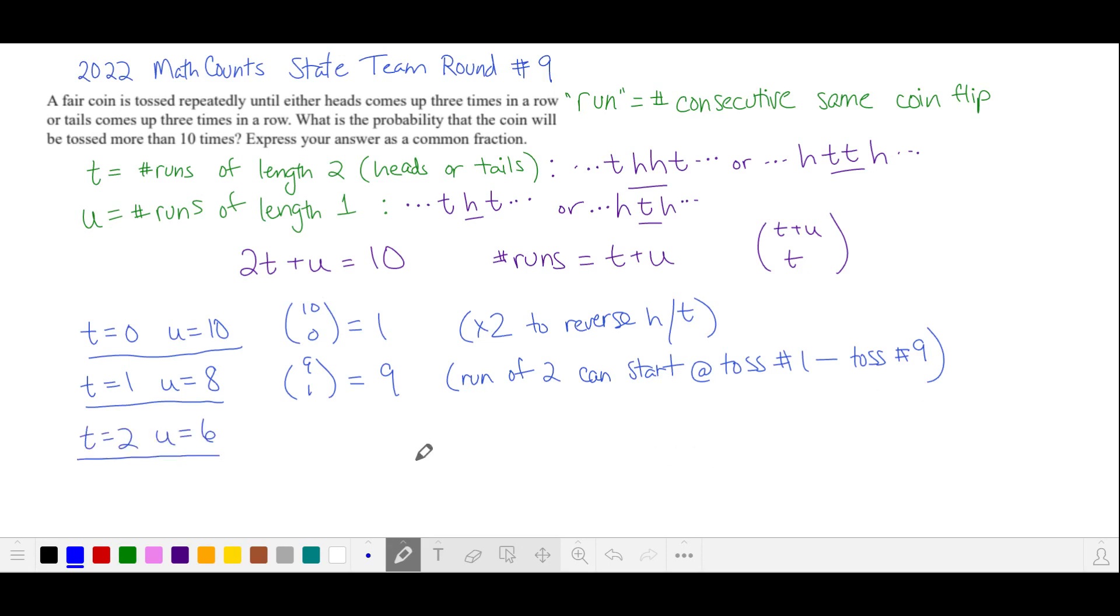We can also have two different runs of 2 tosses and then the rest of them will be runs of length 1. 8 total runs, we're choosing 2 of them to be runs of 2.